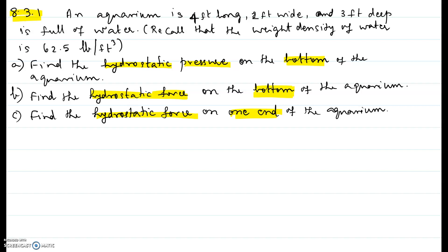Hi, in this video I will be showing you problem number 1 of chapter 8 section 3. An aquarium is 4 feet long, 2 feet wide and 3 feet deep. It is full of water. Recall that the weight density of water is 62.5 lb per feet cube. A, find the hydrostatic pressure on the bottom of the aquarium. B, find the hydrostatic force on the bottom of the aquarium. C, find the hydrostatic force on one end of the aquarium.